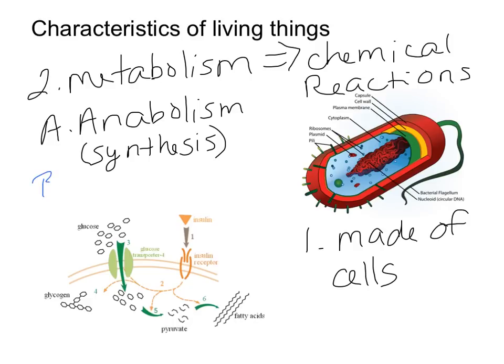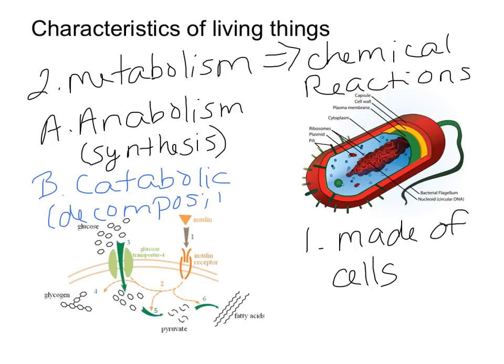The flip side of that is what is called catabolic. Catabolic would be the decomposition or the breakdown of materials. Digestion — we take that food in and break it into the smaller parts it's made of. You can see here glucose molecules being synthesized into glycogen, which would be anabolic. If they went the other direction and were broken down, those would be catabolic reactions.